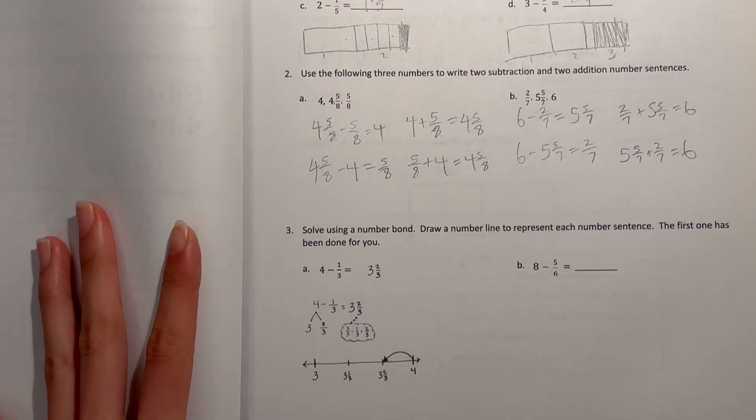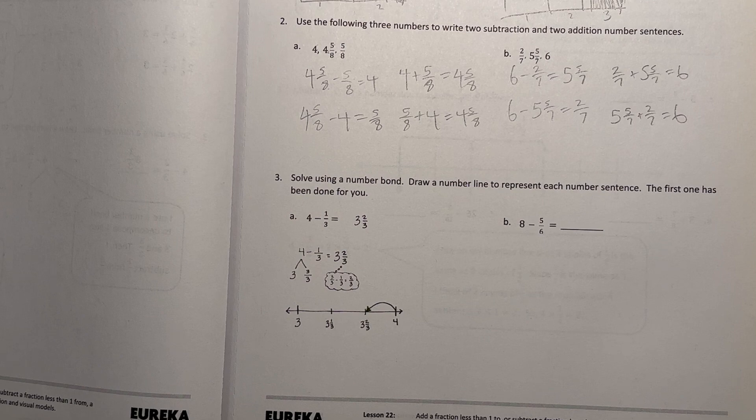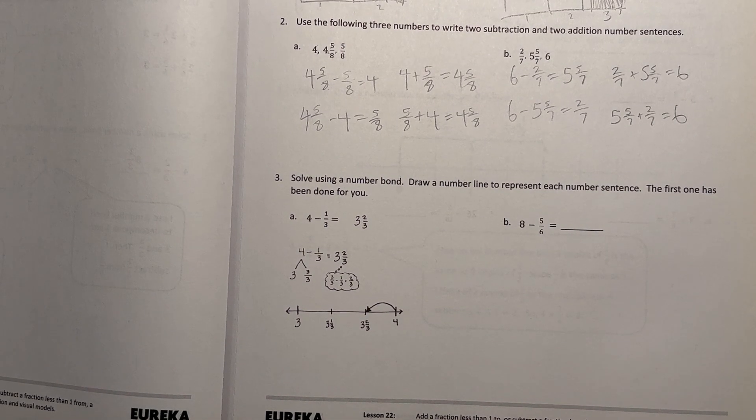All right, now number 3, solve using a number bond, draw a number line to represent each number sentence. The first one has been done for you.